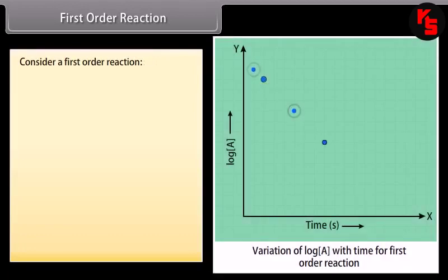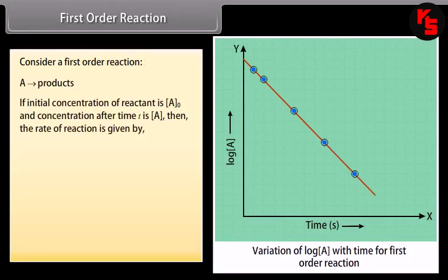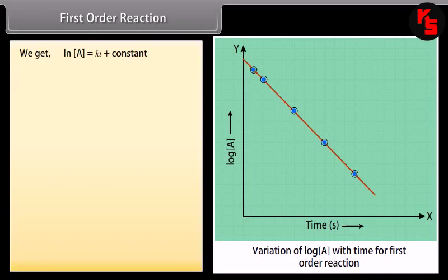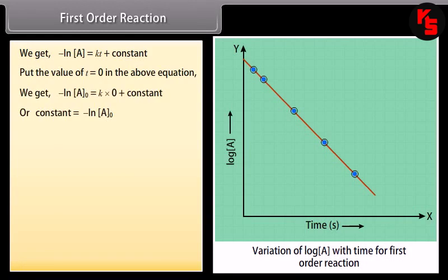For a first-order reaction A → products, if initial concentration is A₀ and concentration at time T is A, then: −dA/dT = K·A. This can be written as −dA/A = K dT. Integrating both sides: −ln A = KT + constant. At T = 0, A = A₀, so the constant equals −ln A₀.